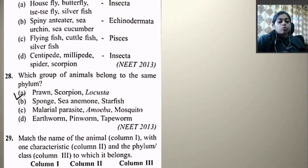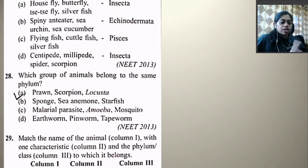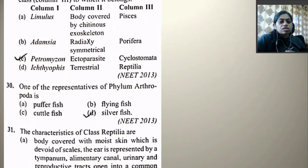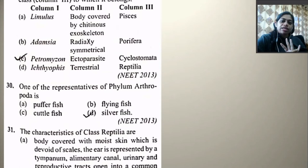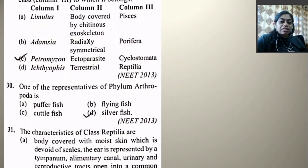Match the name of the animal in column A with one characteristic in column B and the phylum or class in column C. Limulus — body covered by chitinous exoskeleton — Pisces, no. Adamsia — radially symmetrical — Porifera, no. Petromyzon — ectoparasite — Cyclostomata — this is right. Ichthyophis — terrestrial reptile — wrong. So the right option is C.